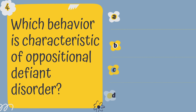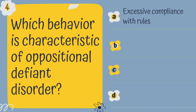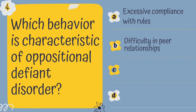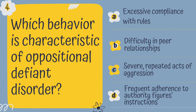Question 4. Which behavior is characteristic of ODD? A. Excessive compliance with rules, B. Difficulty in peer relationships, C. Severe, repeated acts of aggression, or D. Frequent adherence to authority figures' instructions.